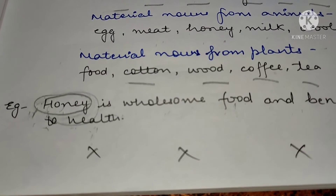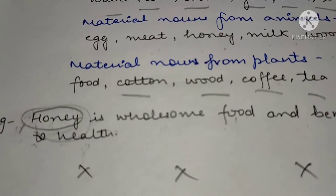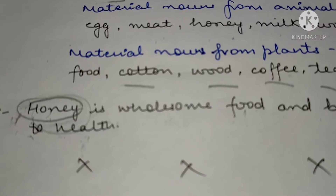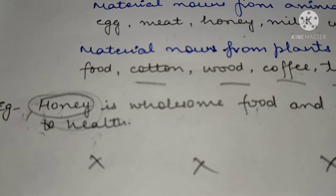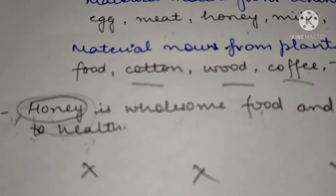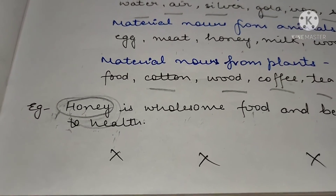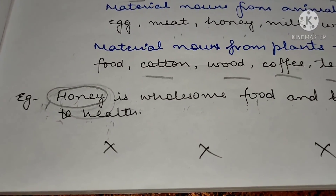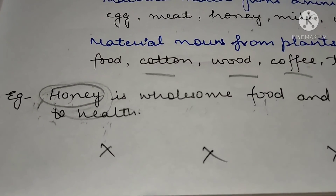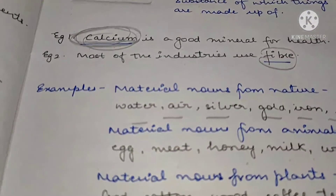That is why I am saying it depends on how the sentence is and what the meaning is. You have to check in the case of common nouns and material nouns. So we have five kinds of nouns: proper noun, common noun, collective noun, abstract noun, and material noun.